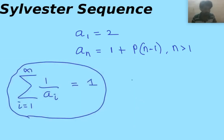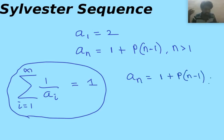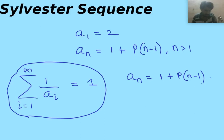In order to do that, let us make some observations. Let us start with the definition of the nth term: a_n is given by 1 plus the product of the first n minus 1 elements. Each element has the information of what is the product of the first n minus 1 elements.